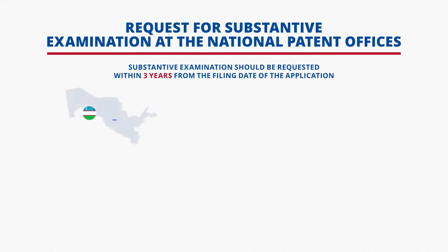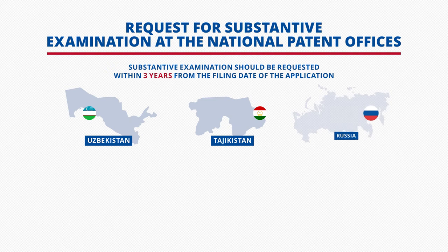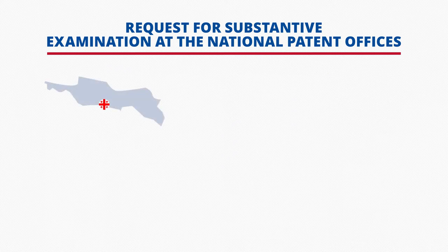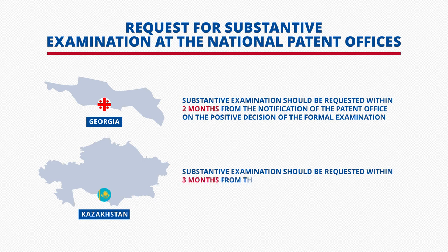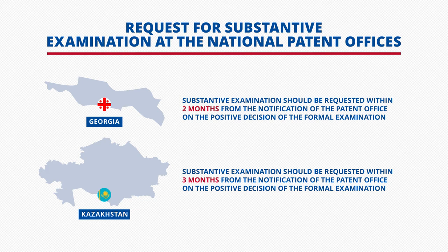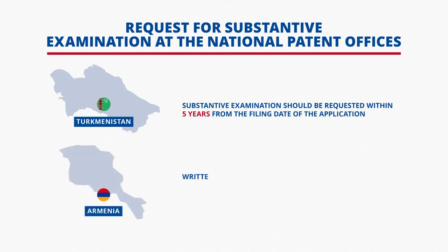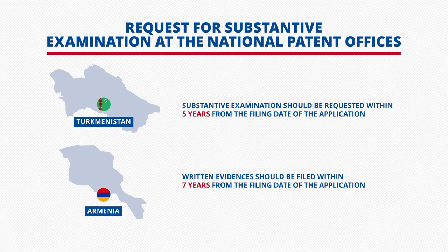The following slides demonstrate the timeframe during which the substantive examination of the application for an invention must be requested, along with some particular features of national legislation concerning the examination. The most common case is when the patent office examines the application at the request of the applicant, a request which may be filed at any time within three years from the filing date. Such timeframes are functional in Uzbekistan, Tajikistan, Russia, Belarus, and Ukraine. In Georgia and Kazakhstan, the substantive examination should be requested after a positive decision on the formal examination has been received — within two months for Georgia and within three months for Kazakhstan. Turkmenistan and Armenia have the longest timescales: five and seven years from filing date respectively. If a request for a substantive examination is not filed before these deadlines, the application shall be considered abandoned.